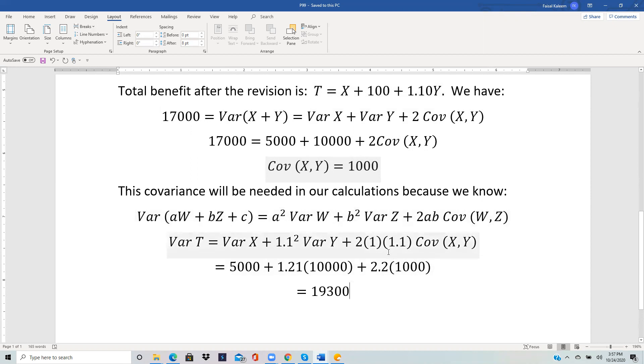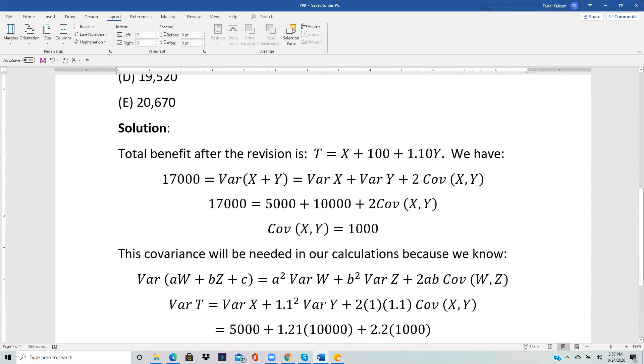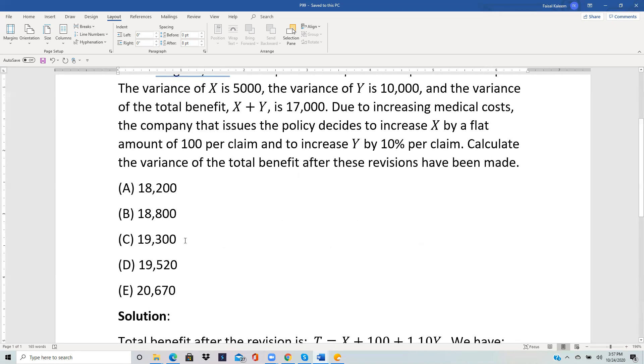And so when we substitute all the values—the variance of X and Y were already given, covariance of X, Y we calculated above—it ends up being 19,300, which is choice C.